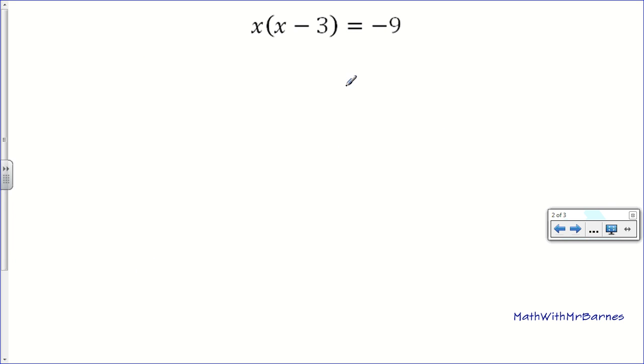So, we can see this one here. It's not in ax squared plus bx plus c form, so I'll just write it up here for reference. ax squared plus bx plus c equal to 0. So, it's not in that form. So, we need to make it look like this.